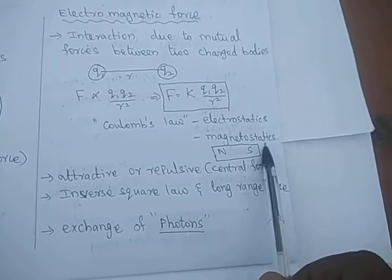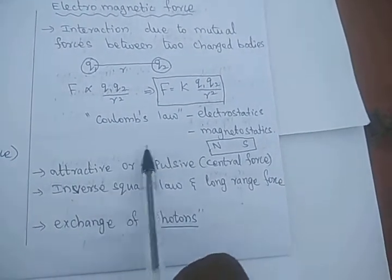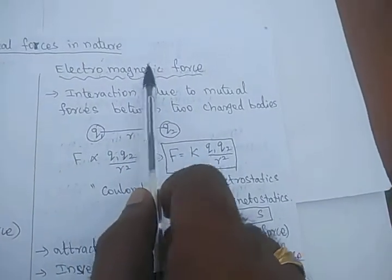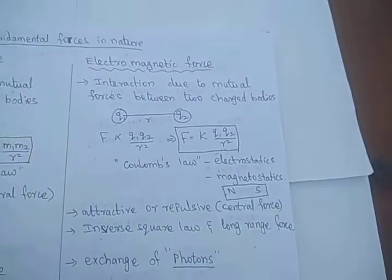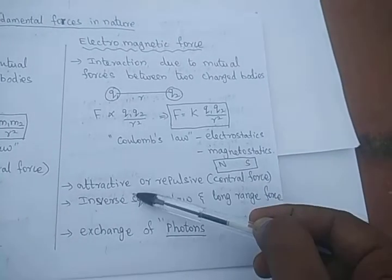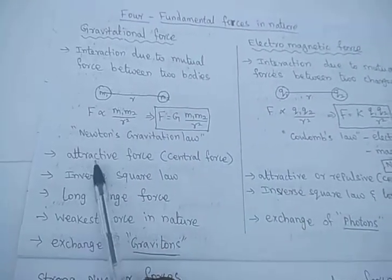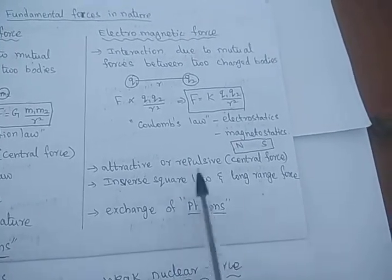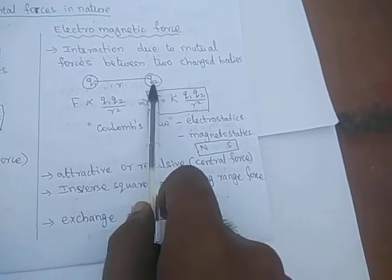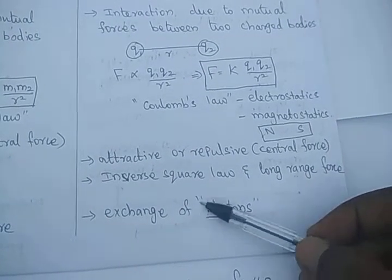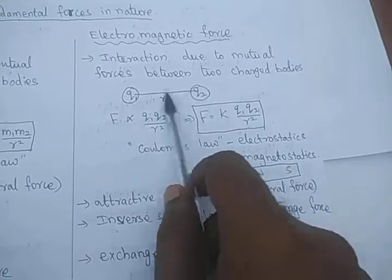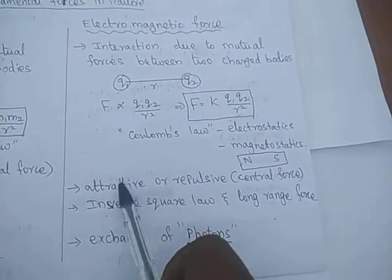This is also applicable to magnetostatics — for a bar magnet, north pole and north pole repel each other, while north pole and south pole attract each other. The combined electric and magnetic force is called electromagnetic force. Some features: electromagnetic force is either attractive or repulsive, whereas gravitational force is only attractive. It also obeys the inverse square law and is a long range force. The messenger particle exchanged between two charges is called the photon — similar to the graviton, the photon is the messenger particle that mediates interaction between two charged bodies, which is the reason for electrostatic attraction or repulsion.